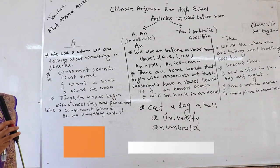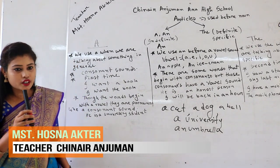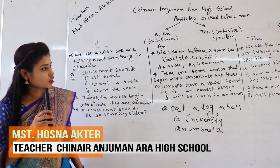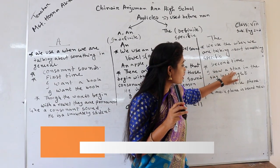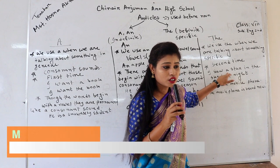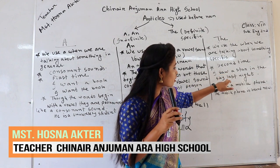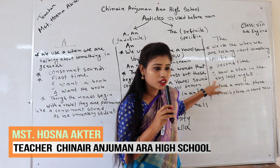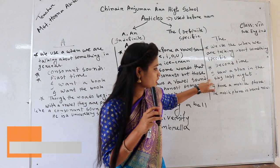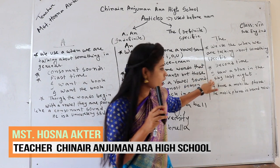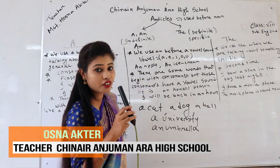Now let's try to know how to use 'the'. We use 'the' when we are talking about something specific or particular. For example: 'I saw a star in the sky last night.' Here we use 'a' before 'star' because there are millions of stars and I just spotted one. But we use 'the' before 'sky' because there is only one sky in the whole universe — it is specific — so we use the definite article 'the' in front of 'sky'.